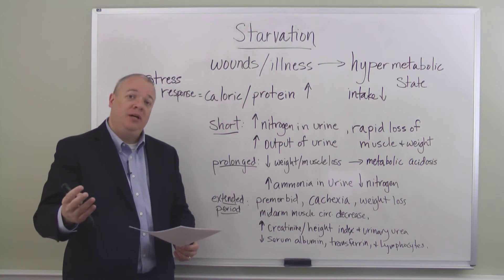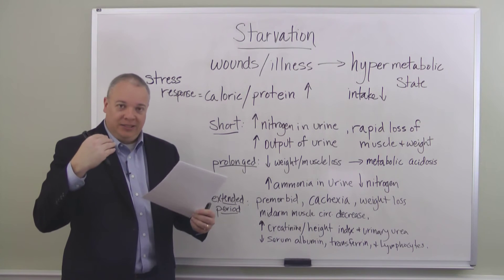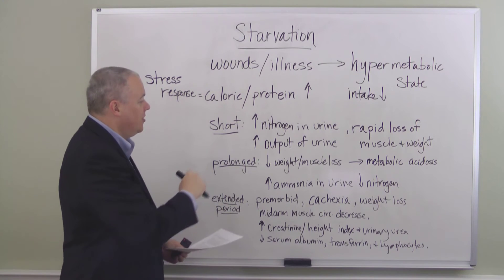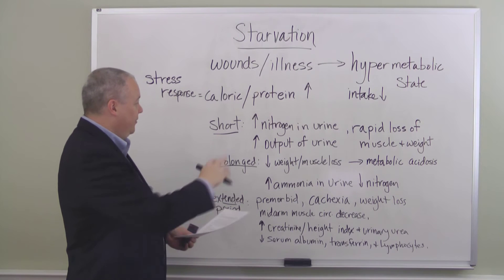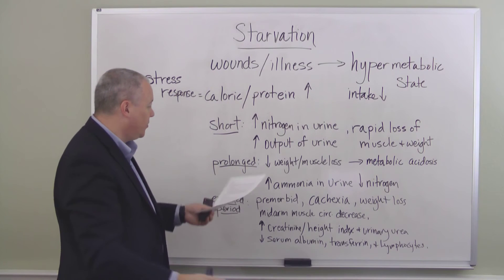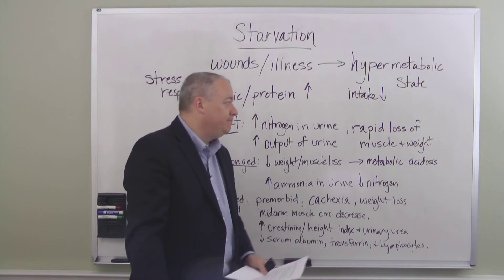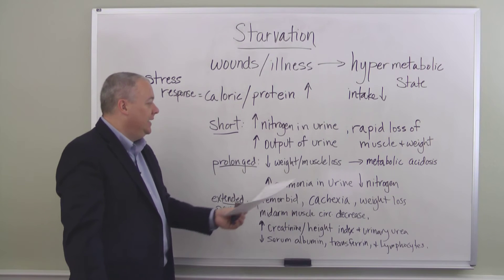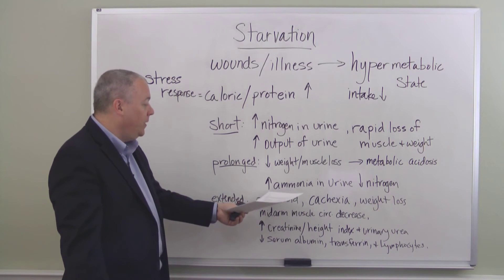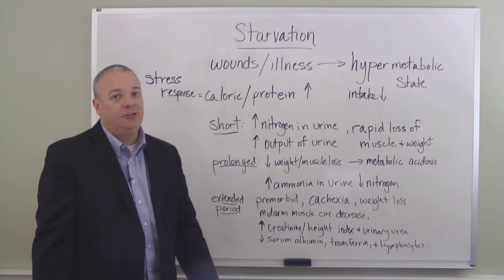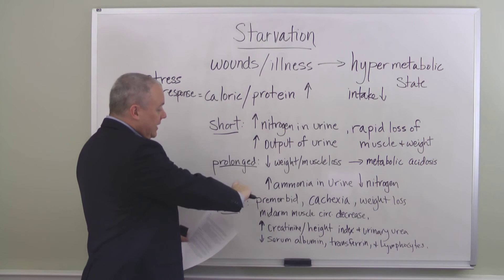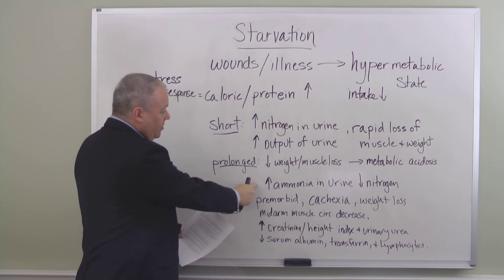If it's not corrected and there is a prolonged period where the body is still under stress — still in a hypermetabolic state wanting increased calories and protein, and that is not met — then what you start getting is that the weight loss and muscle loss actually slows down. It doesn't happen quite as rapidly in this prolonged state, and you get metabolic acidosis. What you do get is a sharp increase in the ammonia in the urine and a decrease in the nitrogen in the urine. Short-term starvation saw a sharp increase in nitrogen in the urine, but here the nitrogen goes down while the ammonia goes up.